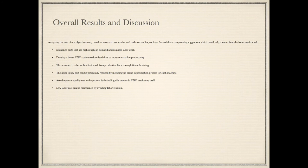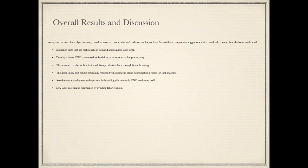Overall Results and Discussion: Analyzing the rate of our objectives met, based on research case studies and real case studies, we have formed the following suggestions to help address the issues confronted. Exchange parts that are high in demand and require labor work. Develop better CNC code to reduce lead time and increase machine productivity. Unwanted tools can be eliminated from the production floor through 5S methodology. Labor injury cost can potentially be reduced by including automation in the production process for each machine. Avoid separate quality tests by including this process in CNC machining itself. Low labor cost can be maintained by avoiding labor attrition.